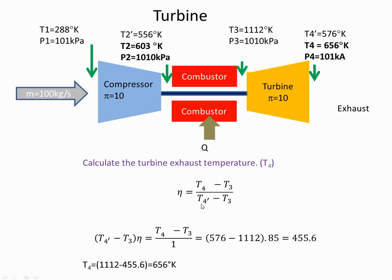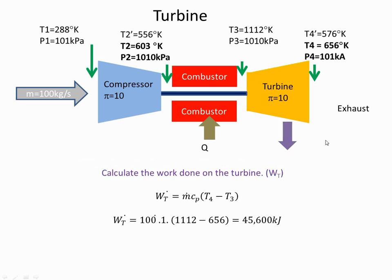For T4, the isentropic efficiency of a turbine is given by this equation, and once again when I plug the values in I'll get a real output temperature of 656 degrees Kelvin. Using that real value of 656, and knowing that the input is 1112, I can work out that the work done in this section of the engine is 45,600 kilojoules.